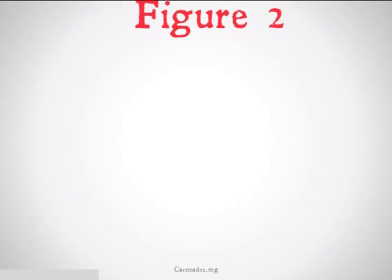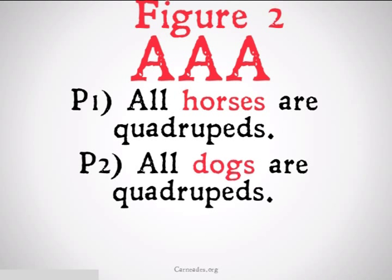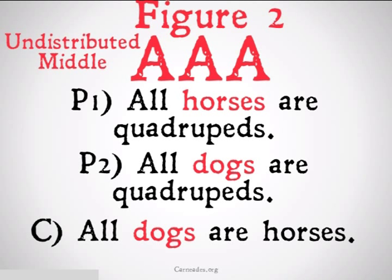An example of this fallacy is figure 2 AAA: all horses are quadrupeds, all dogs are quadrupeds, therefore all dogs are horses. I've highlighted the distributed terms in red, and we can see that the middle term, quadrupeds, never gets distributed — and clearly this is an invalid argument.